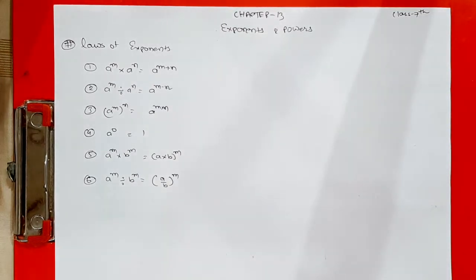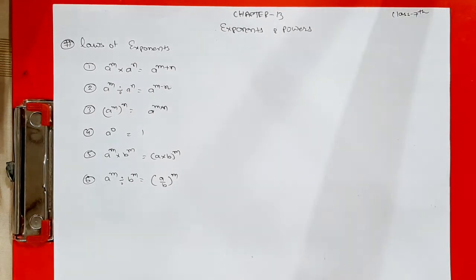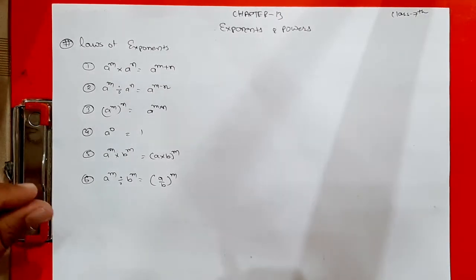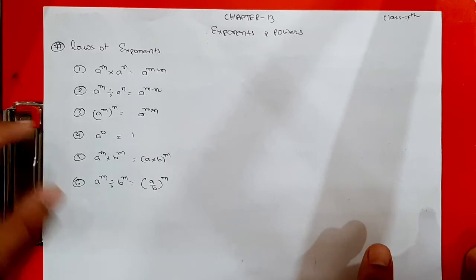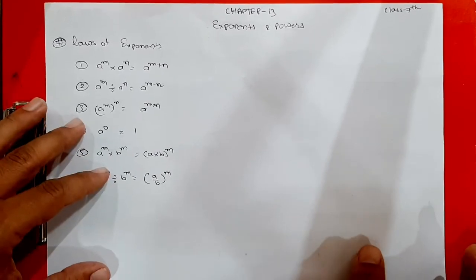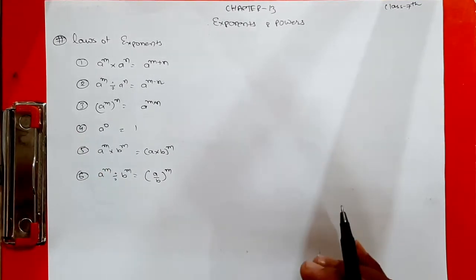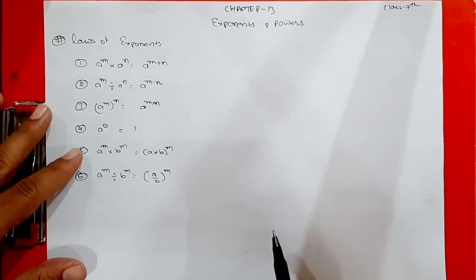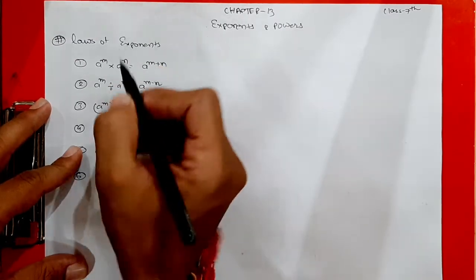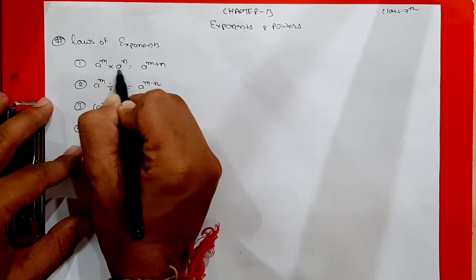There are 6 laws of exponents in Class 8. The first law is: a raised to m multiplied by a raised to n is equal to a raised to m plus n.